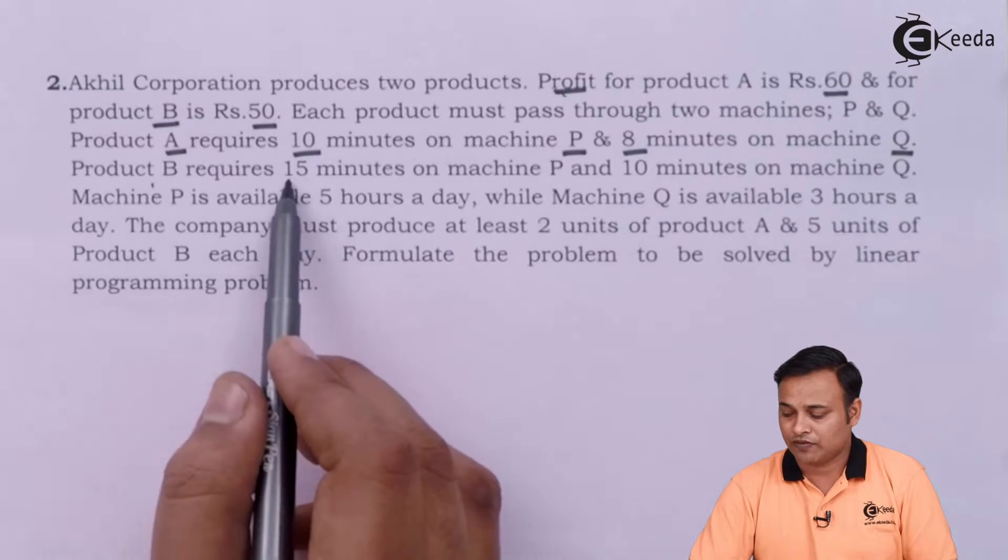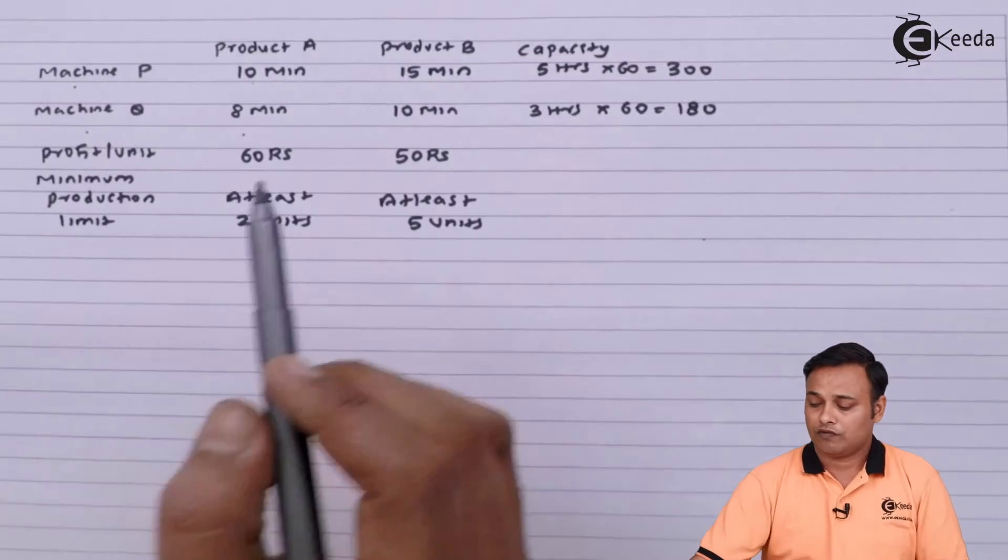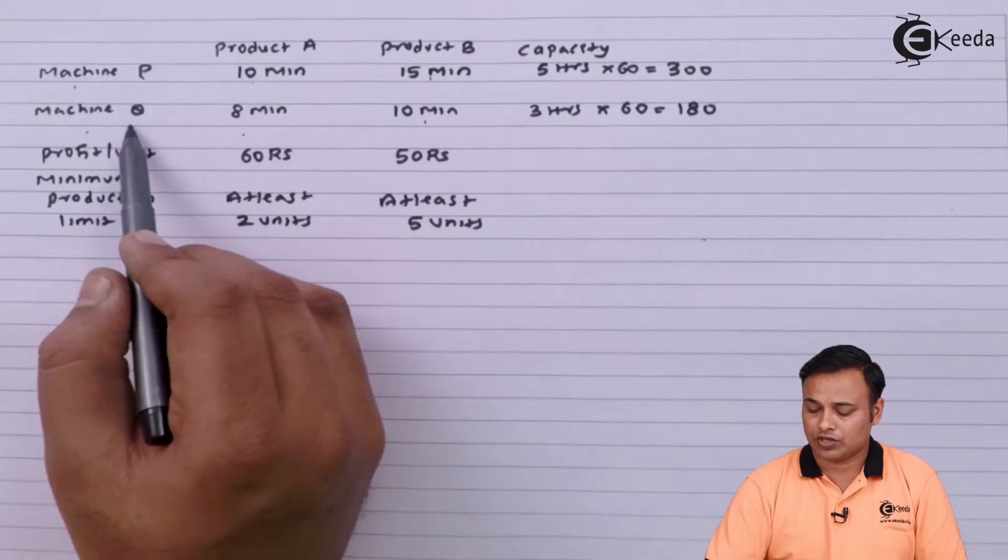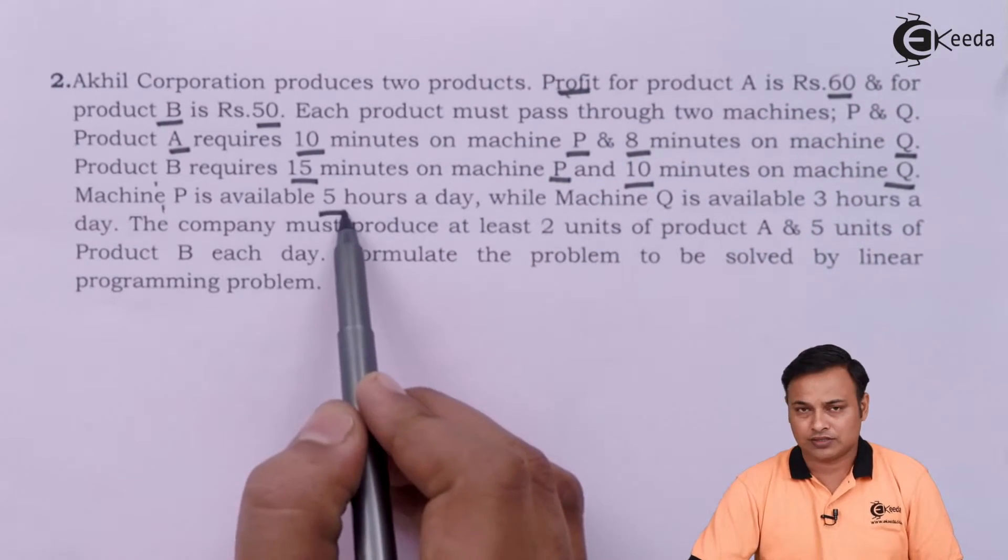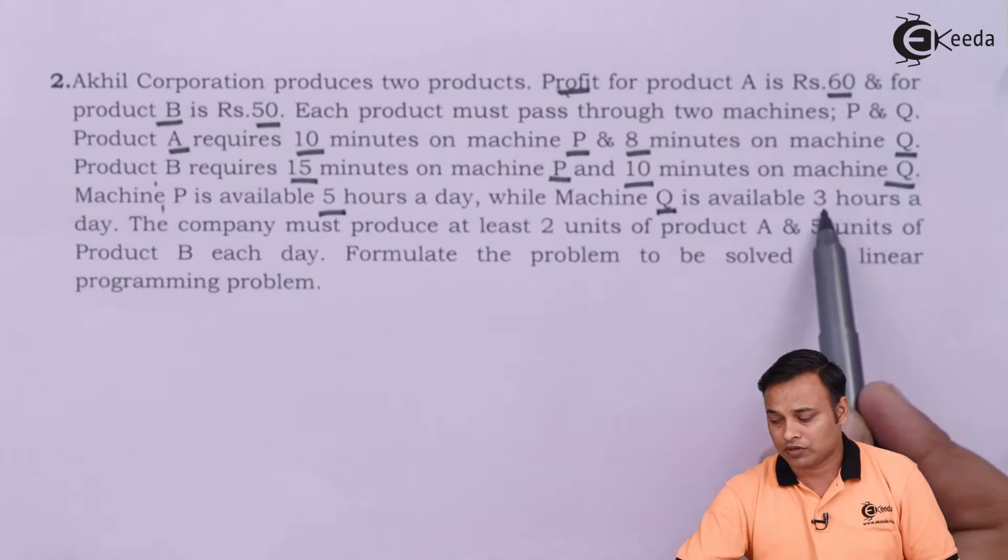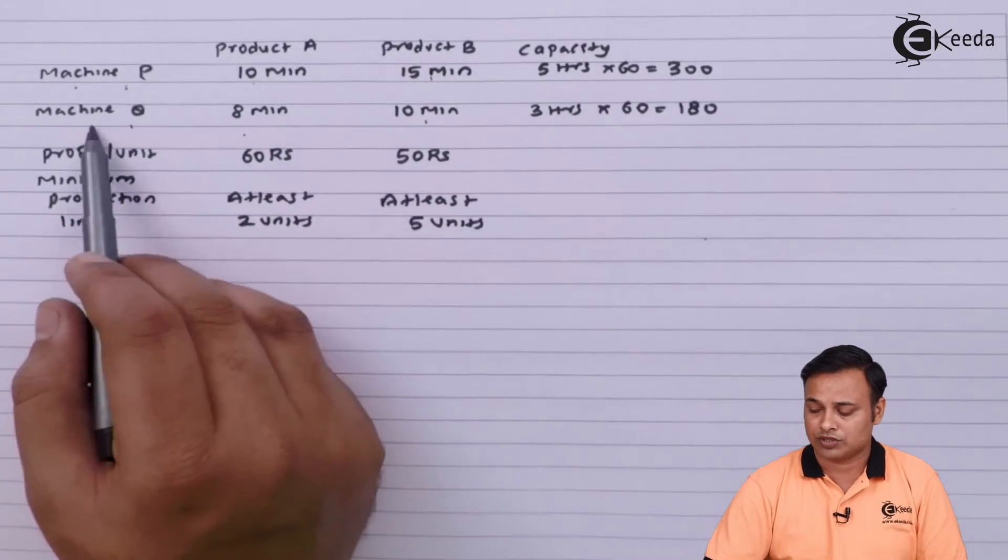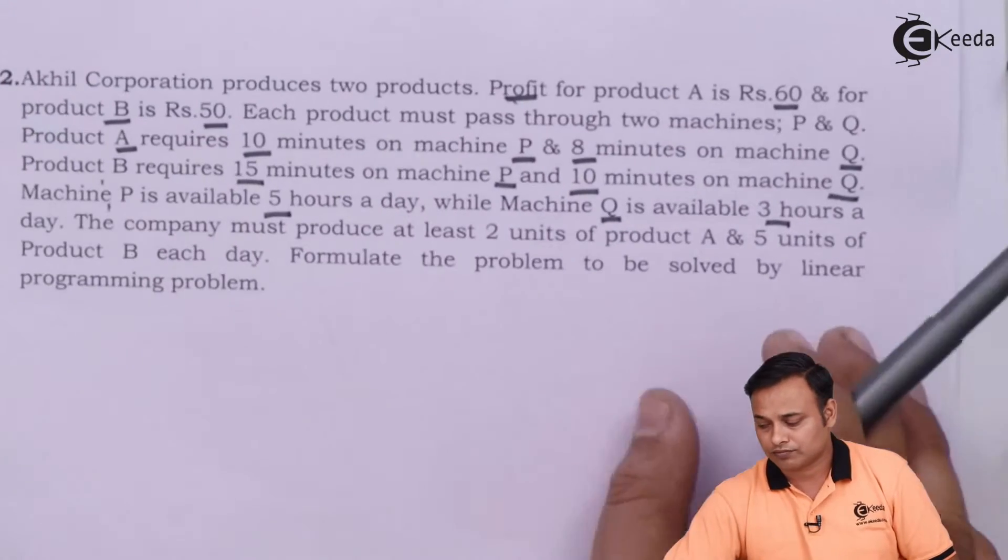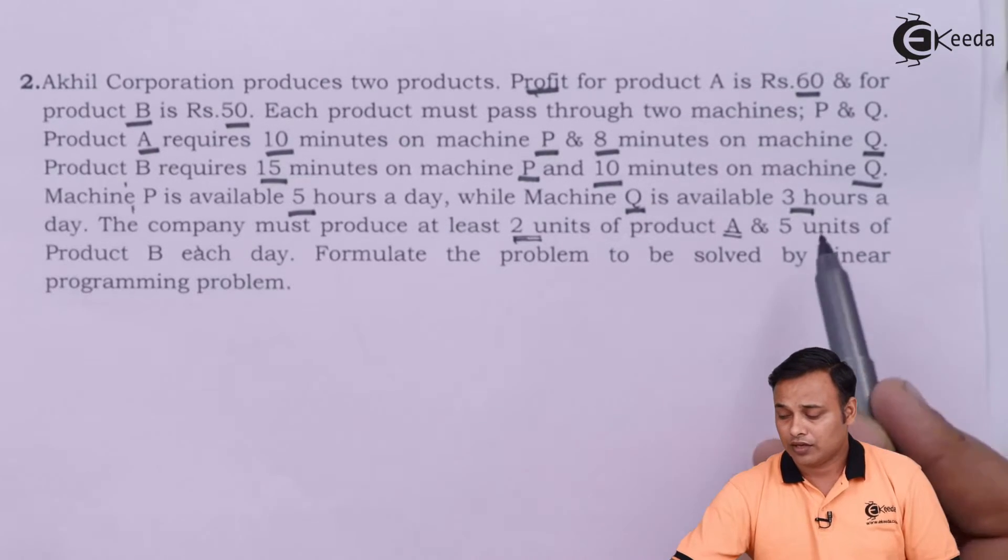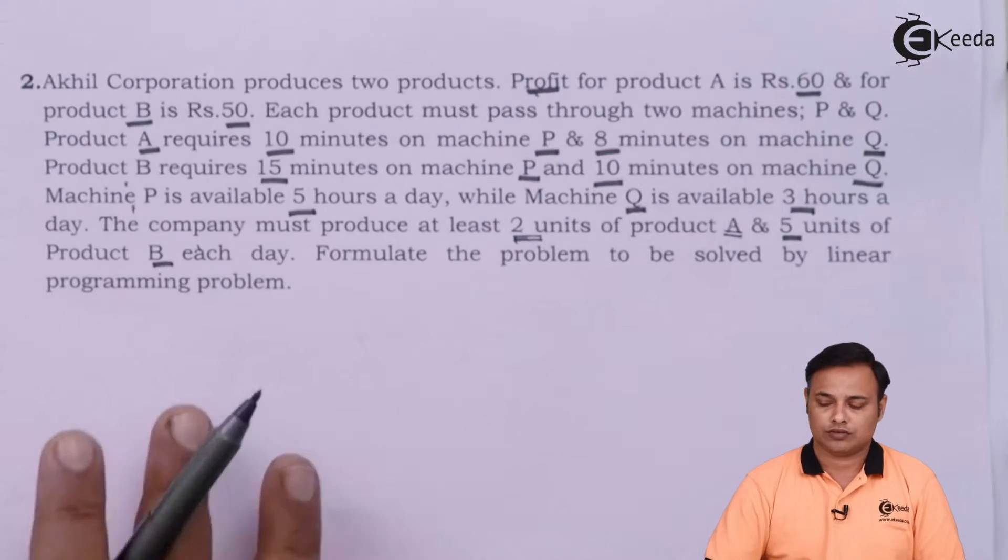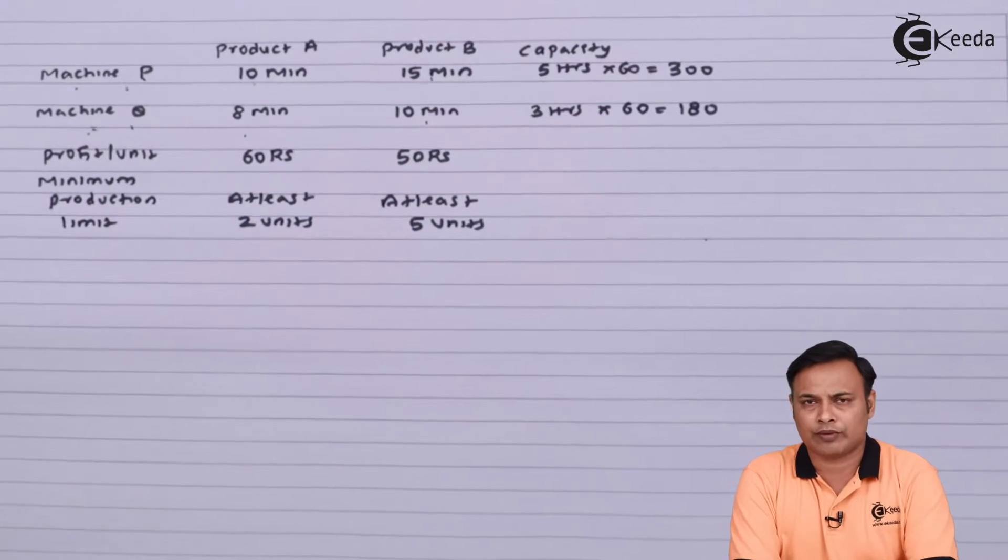But B requires 15 on machine P, 10 on machine Q. P is available for 5 hours, that is 300 minutes. Q available for 3 hours, that is 180 minutes. That is my supply against both the machines. And last line: company must produce at least 2 units of A and 5 units of B. So I just tabulated the whole data.